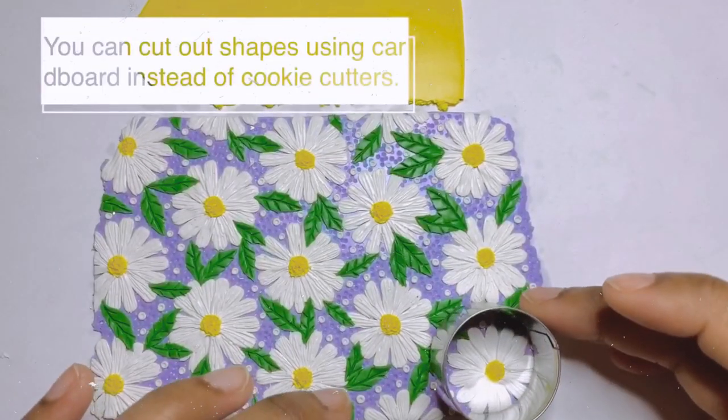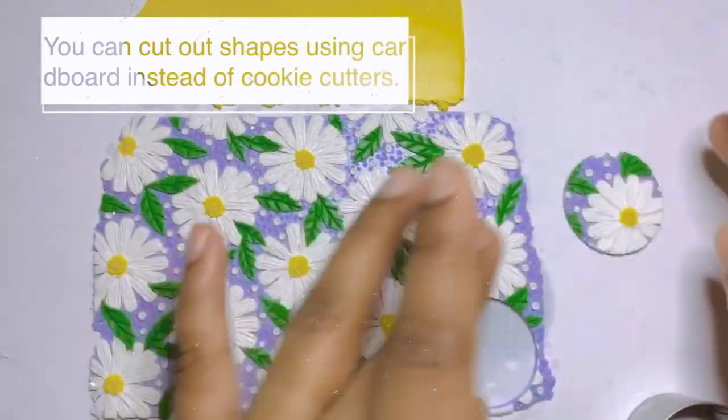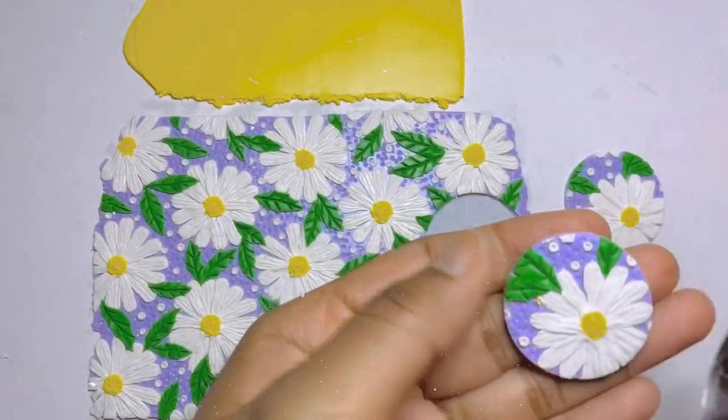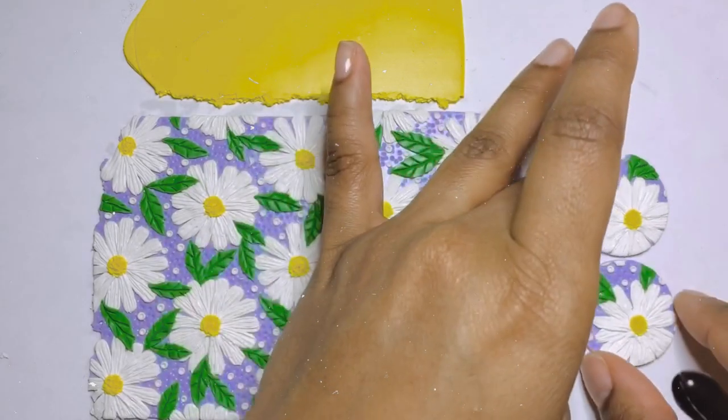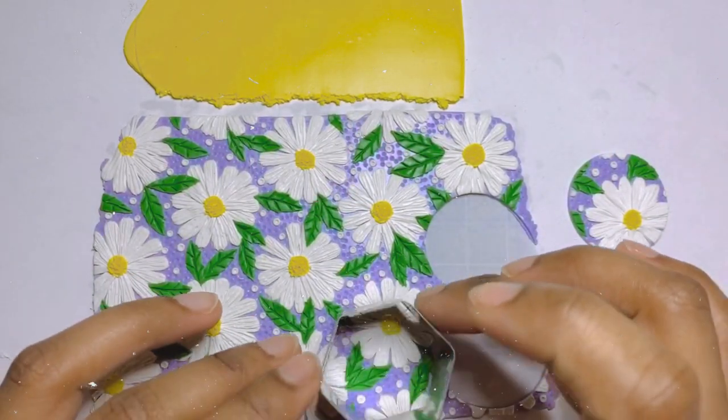Now that our daisies slab is finished, we can start cutting the shapes for the earrings. I know cutting this slab seems really sad but we are going to get some really beautiful earrings out of it.